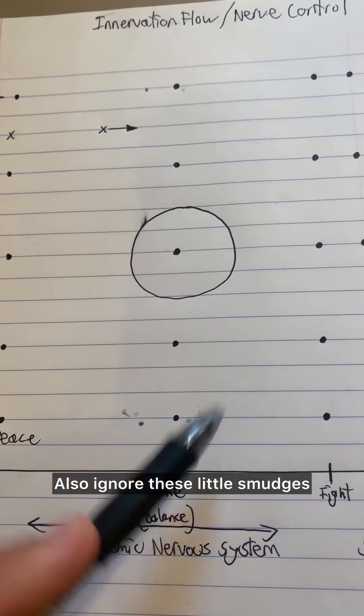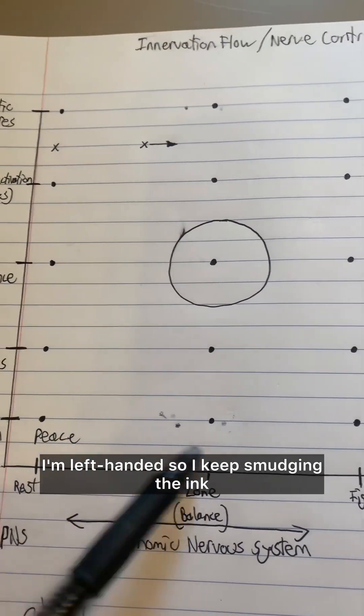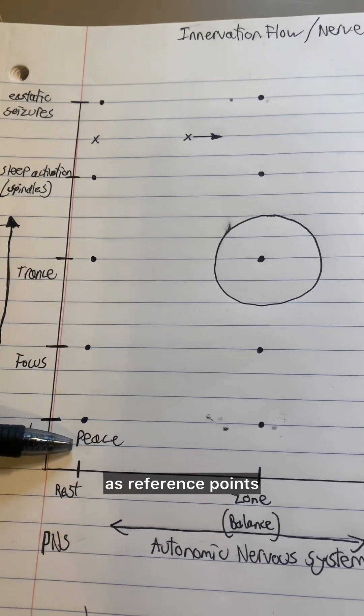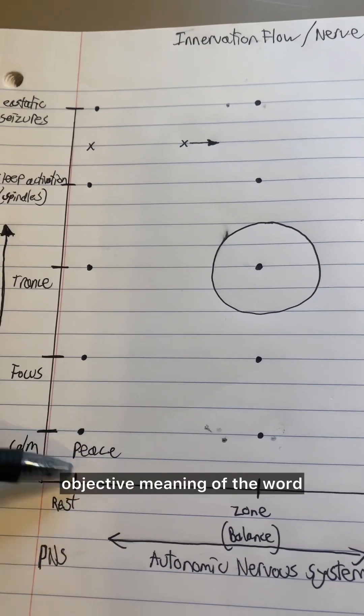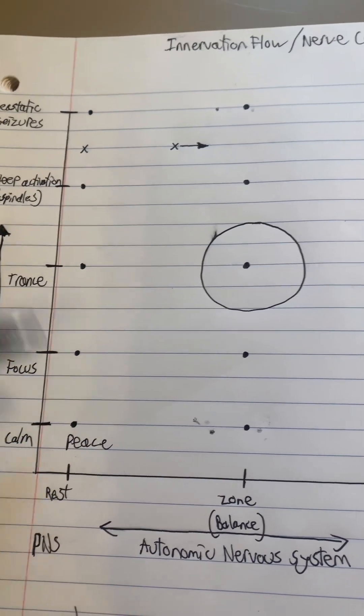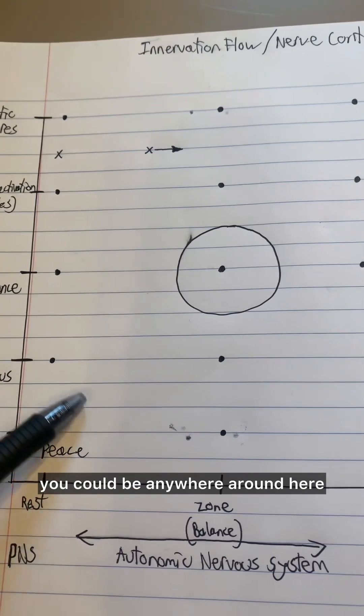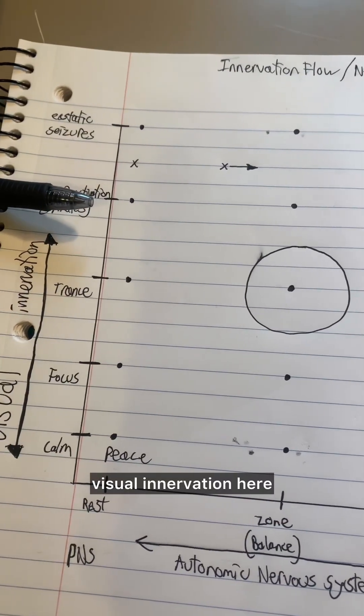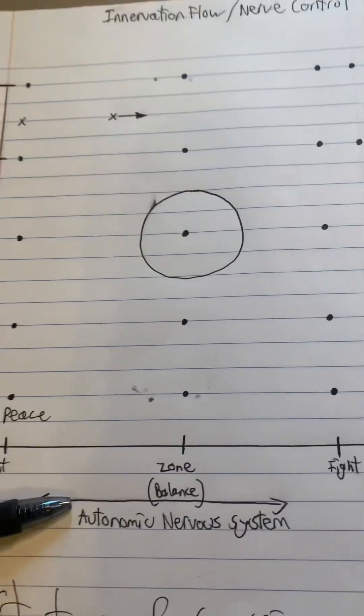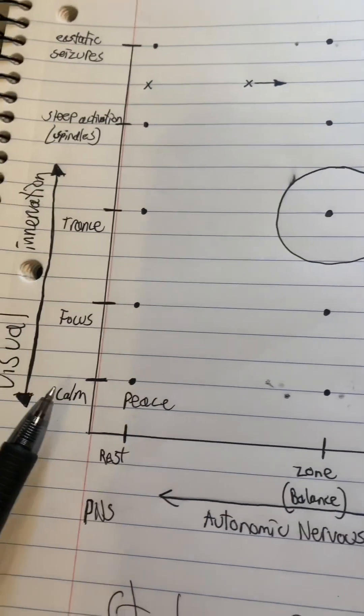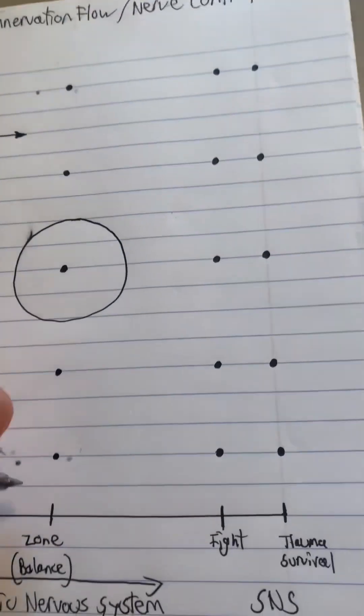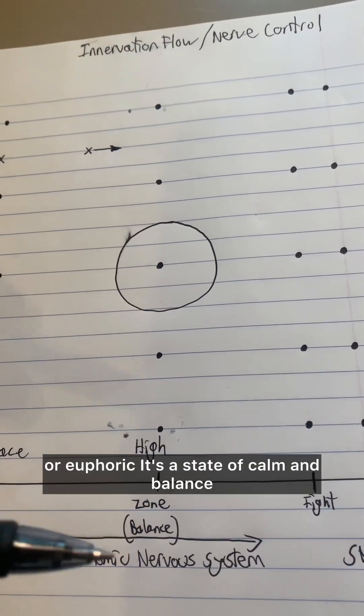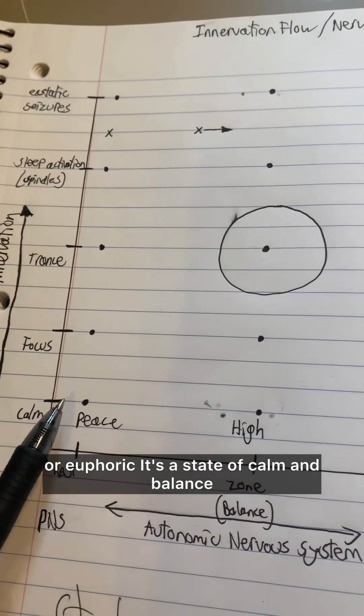Also, ignore these little smudges, I'm left-handed, so I keep smudging the ink. But this is a good example of how we're going to label them as reference points and don't necessarily be attached to the objective meaning of the word. And again, you could be anywhere around here. There's an infinite number of points that you could have. It's simply visual innervation here and autonomic innervation here. So when the autonomic nervous system is balanced and visual signals are calm, we're in a state of high. You could also say you're elated or euphoric. It's a state of calm and balance.